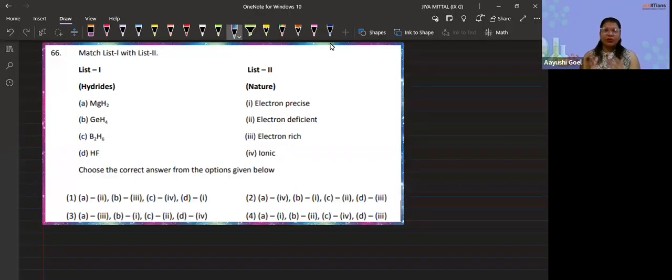This question is a match the following type. In the case of match the followings, we need to see one by one what options are matching. In the first list they have given you hydrides, and in the second list they have given their nature: electron precise, electron deficient, electron rich, and ionic species.